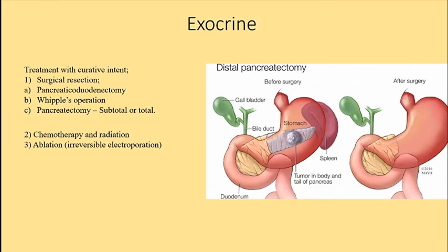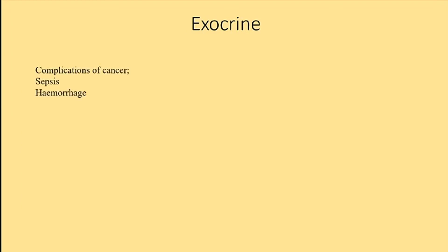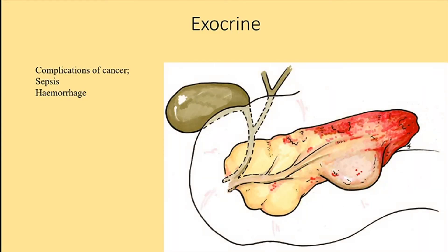For locally advanced unresectable disease, treatment with palliative intent aims to manage symptoms. For pain, oral narcotics are used. For jaundice, an endoscopic biliary stent is placed. For duodenal obstruction, endoscopic metallic duodenal stents or surgical bypass can be performed.